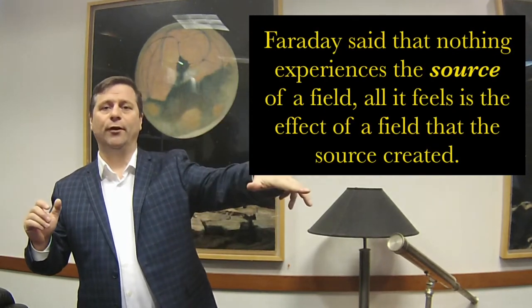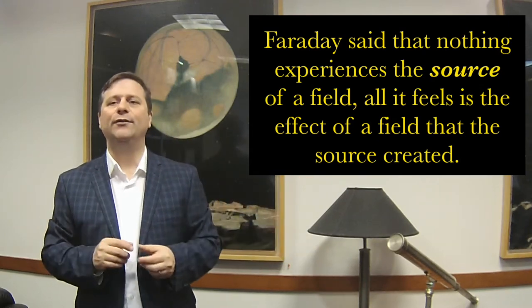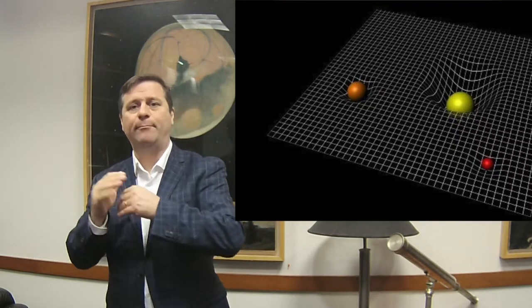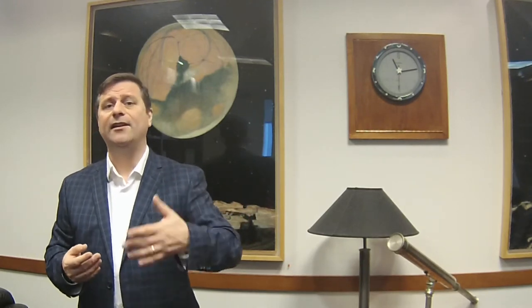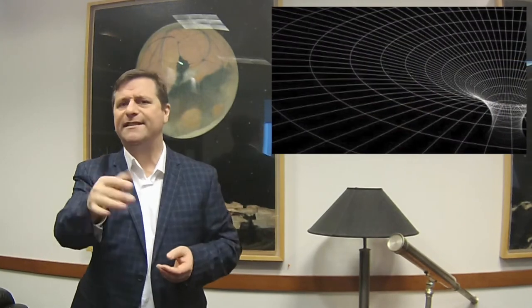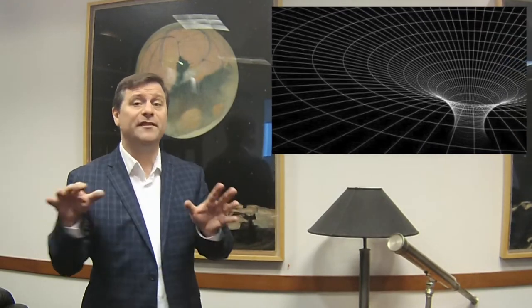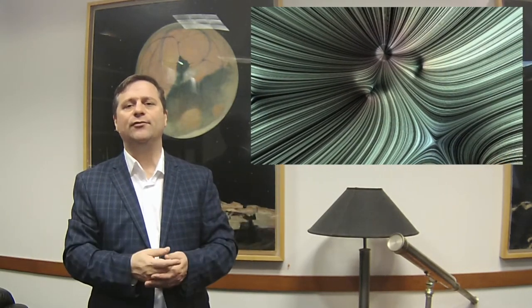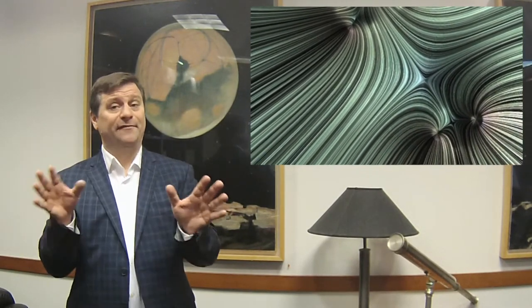Faraday went even further to say that nothing actually feels the source — it only feels the field that the source creates. His classic argument using gravity: what if the Sun didn't have any planets around it, and you magically dropped Earth in its proper place? It would have to behave according to the field lines present as a result of the Sun. You don't need the test particle — the Earth, an electron — for the field to be there. The field is just there waiting to be accessed. Disturbances in it are what we call light.